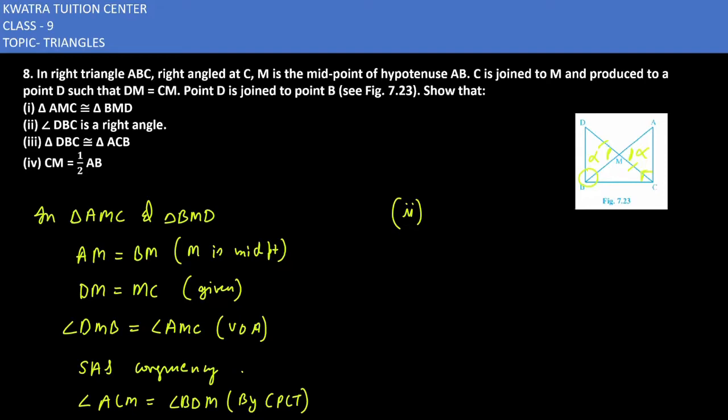These are alternate angles, angle DBC and angle ACB. Actually, angle DBC plus angle ACB are co-interior angles. So they sum to 180 degrees.